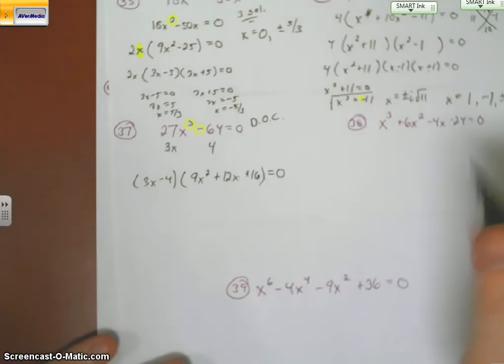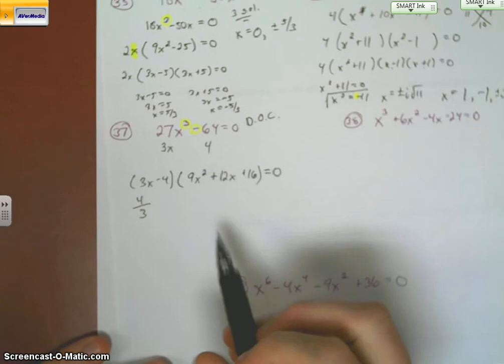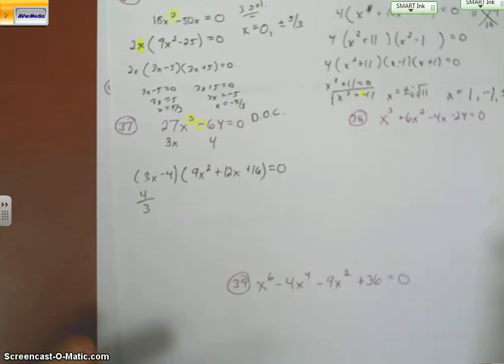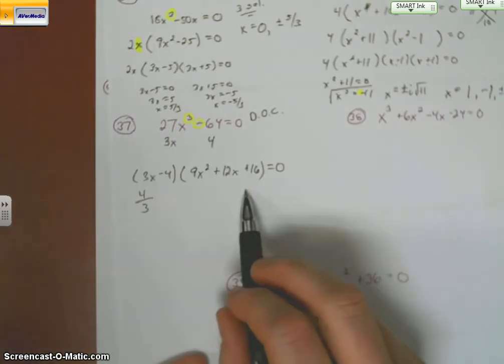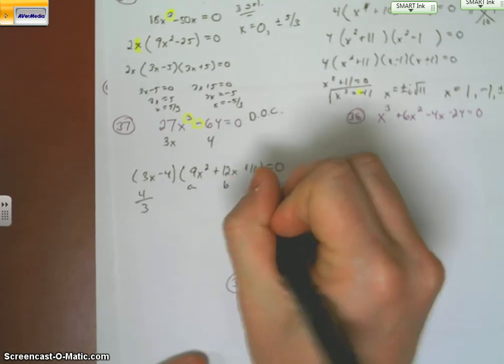We are looking for 3 solutions. I know this one is going to give me 4 thirds. I add 4. I divide by 3. So that's one of my answers. The other guy, we're going to have to do the quadratic formula. This is not factorable. So here's my a, here's my b, here's my c.